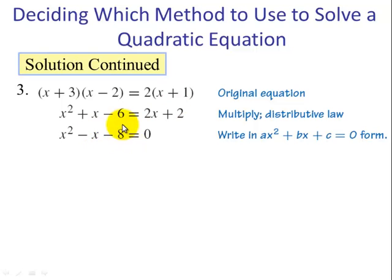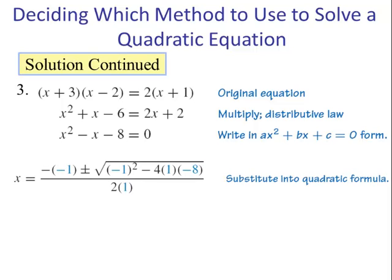This does not factor, so we are forced to use the quadratic formula. a = 1, b = -1, and c = -8. Plugging these values into the quadratic formula, we get x = (1 ± √33) / 2.